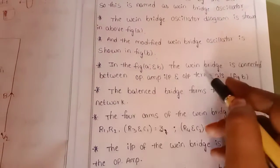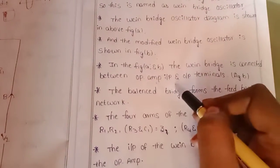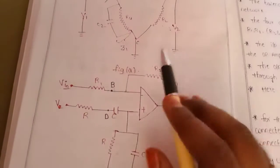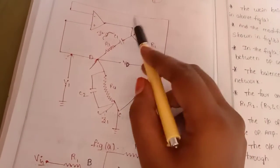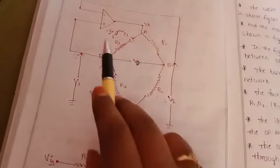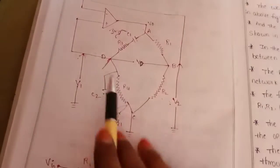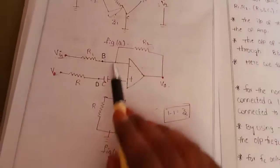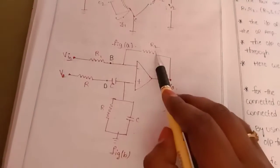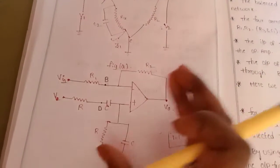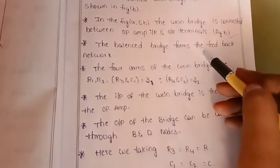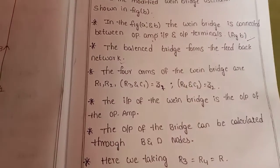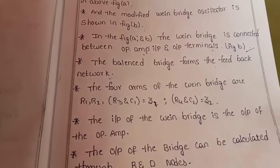In figures A and B, the Wien Bridge is connected between the op-amp input and output terminals. The Wien Bridge forms the feedback network between the input and output of the op-amp. The balance of the bridge forms the feedback network.